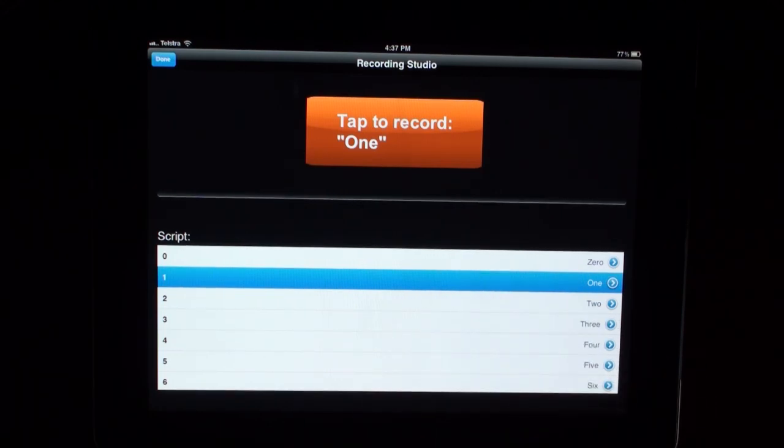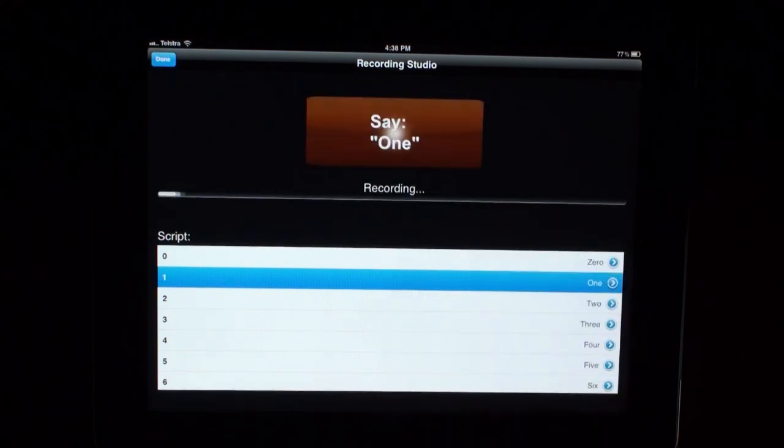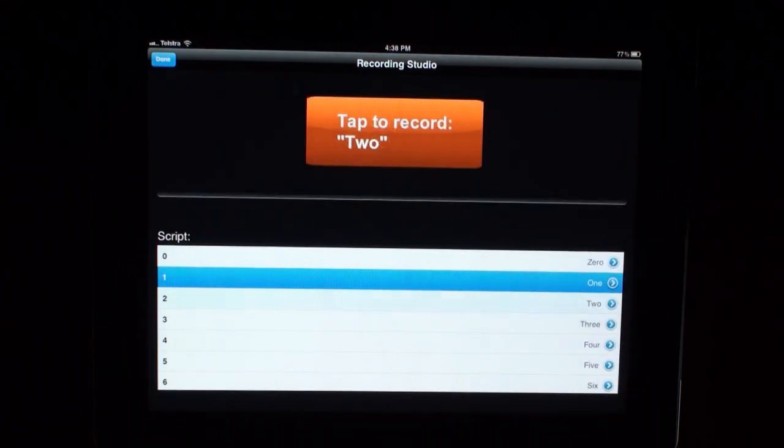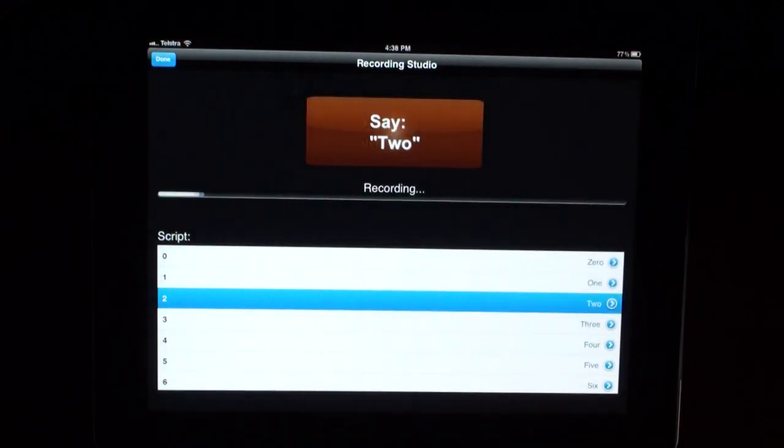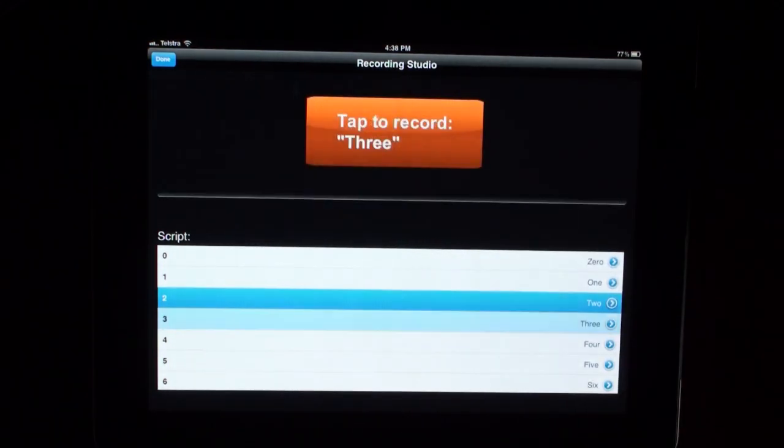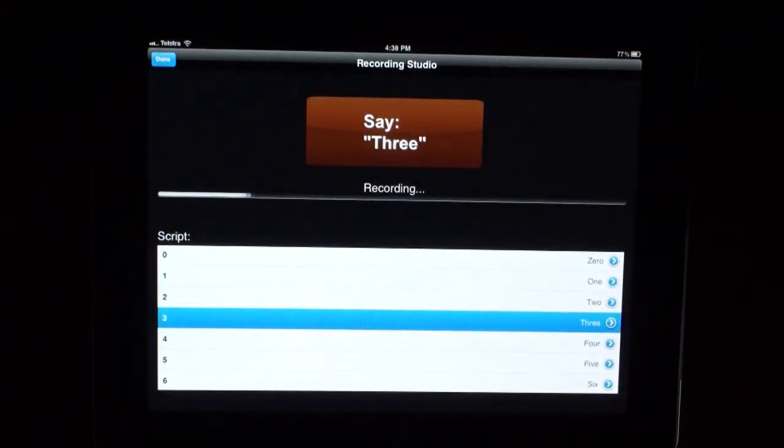Up here it shows you what you will need to say. Once you've tapped on the orange button and the progress bar starts to progress, say your number. 1. Let's move on to the next number. 2. 3.